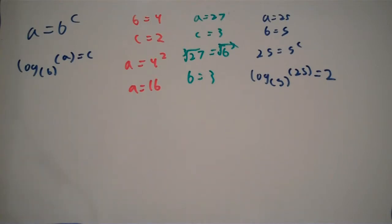Which makes sense because 5 squared is 25. Now, that previous example was a bit of an easy one — most people know that 5 squared is 25, so most of you can figure out that c equals 2 right away. However, logarithms can also be much more complicated. For example, log base 17 of 31 — I at least can't do that in my head, which is why most logarithms are used with a calculator.